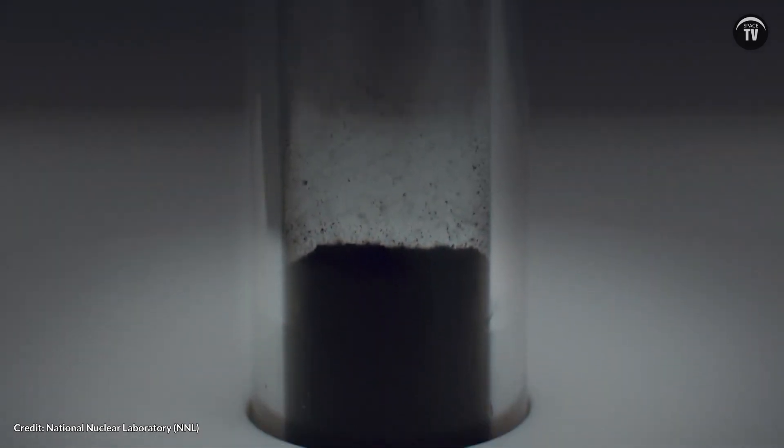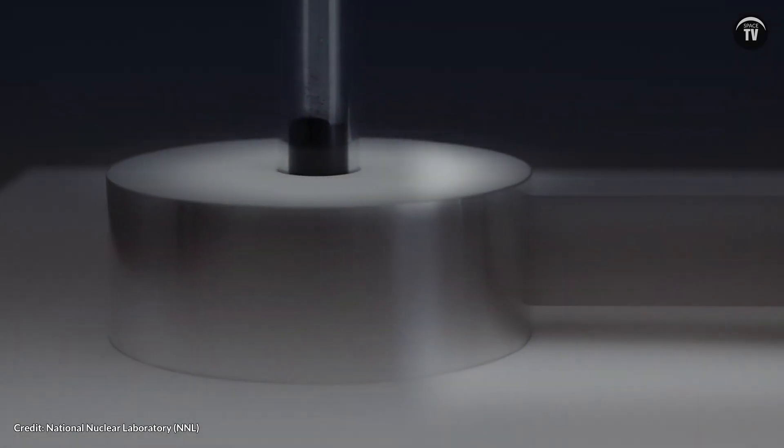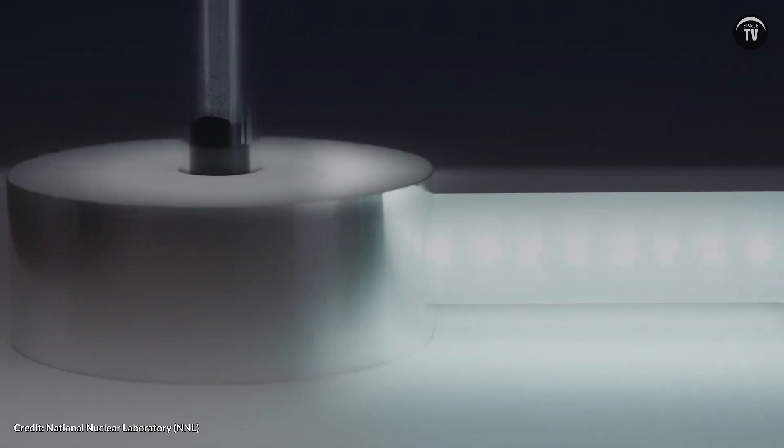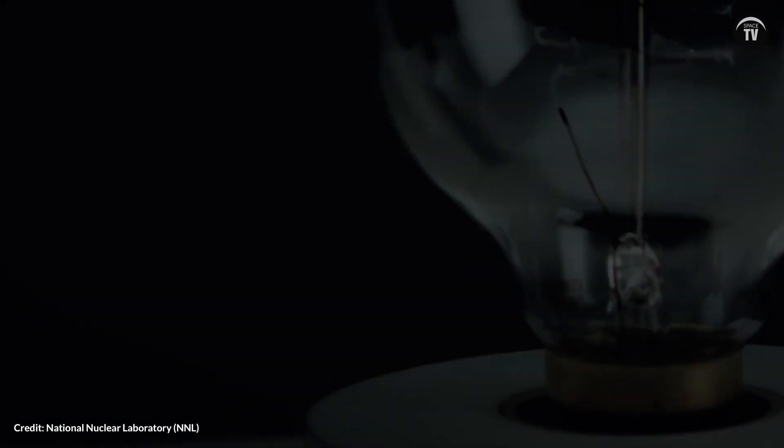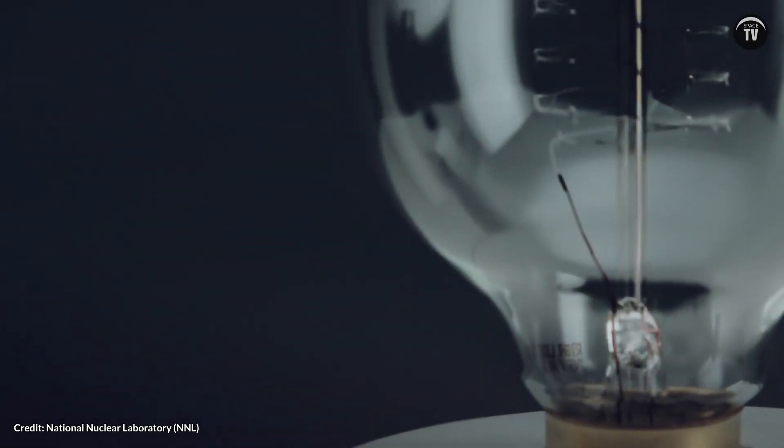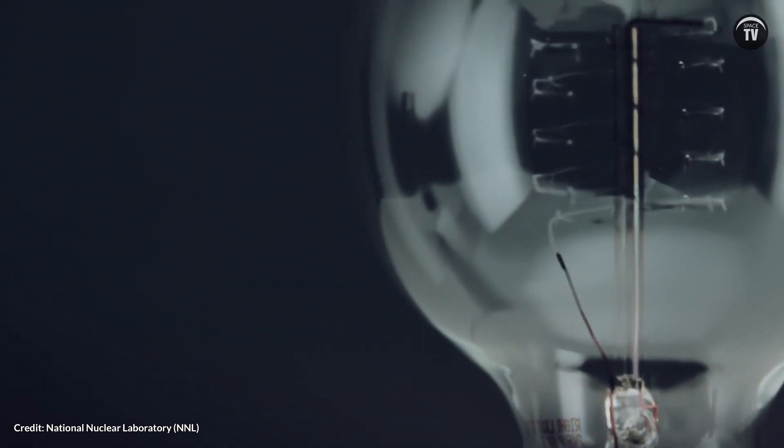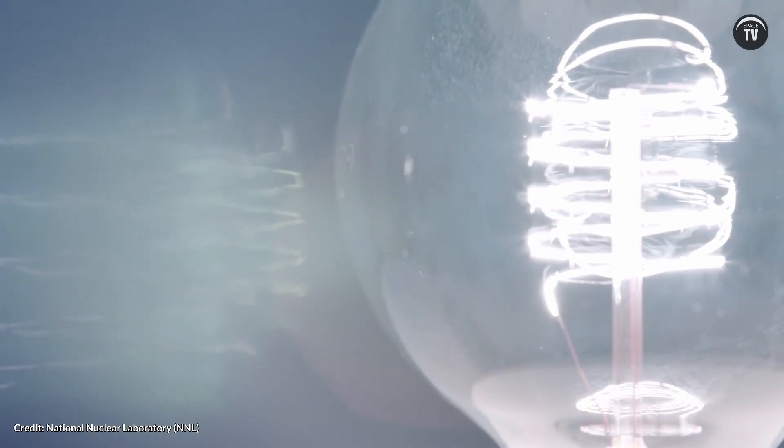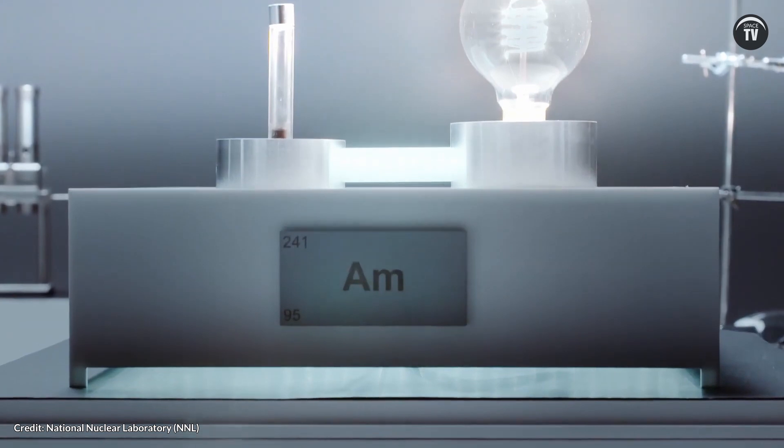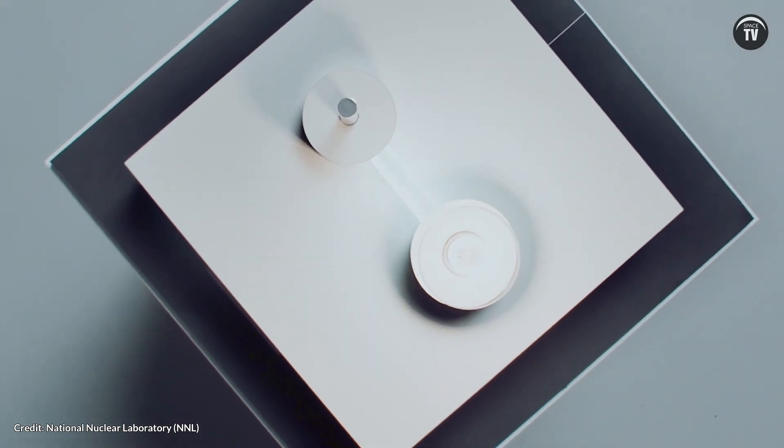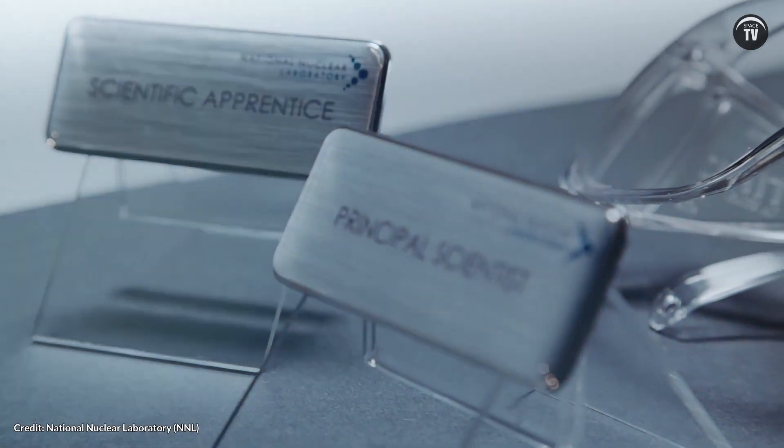Back in 2019, researchers from the National Nuclear Laboratory were able to use a small amount of extracted AM-241 successfully to generate enough electrical current to power a light bulb. Having been successful in creating AM-241 at gram scale, they are now expanding to produce it on an industrial scale.